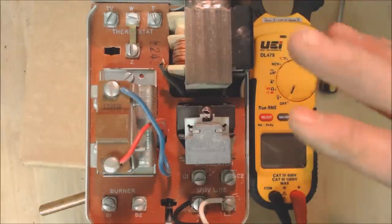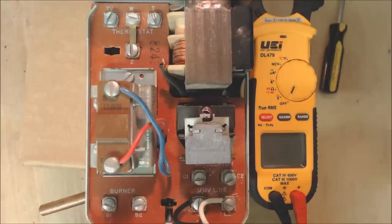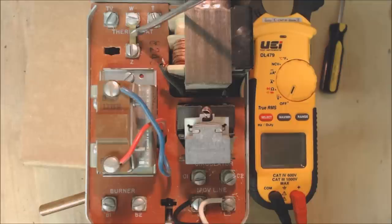To demonstrate that, I'm going to turn this on and take my DL479 and show you how that voltage is following. I'm also going to take out this little jumper here from Z to W just to show you the 24 volt circuit.